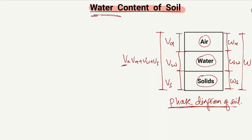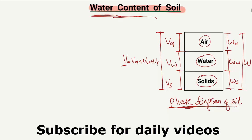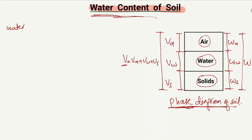Now, what is the water content of the soil when we have the phase diagram of the soil sample? The water content is represented by small w with a percentage unit, because water content is always in percentage. Water content is equal to the weight of water divided by the weight of solids.